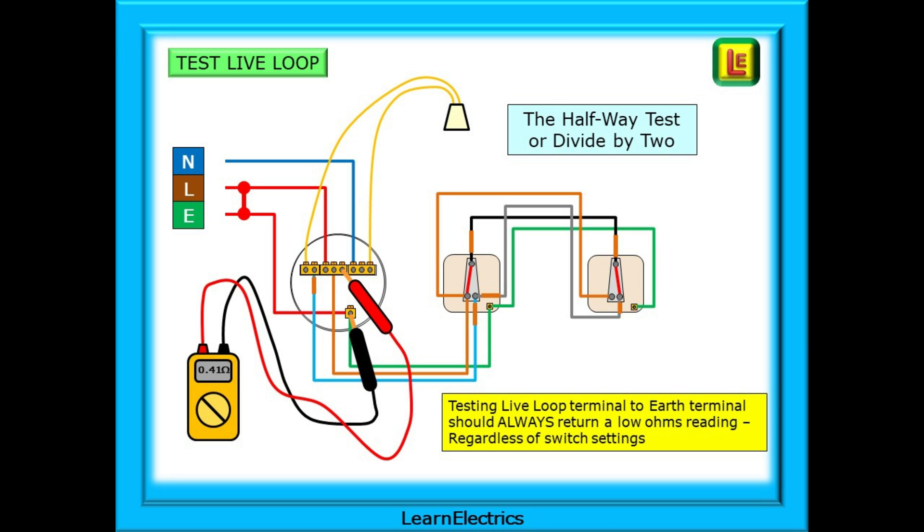Therefore, with the link between the line and CPC at the consumer unit still in place, we can test at the ceiling rose. Live loop to the earth terminal should always give a low ohms reading. Always, regardless of the two-way switch settings, live loop to earth will always be continuous in a good circuit. If it is continuous, 0.41 ohms as shown here, then the first part of the circuit is okay. The problem is with the wiring after it comes into the ceiling rose, or again, how the test meter is set up. If you have an OL or maximum reading, the problem is between the ceiling rose and the consumer unit. This is a good test to remember for lots of electrical problems. If you can find a suitable place to test mid-circuit, you can quickly keep dividing by two and focus on where the problem is.